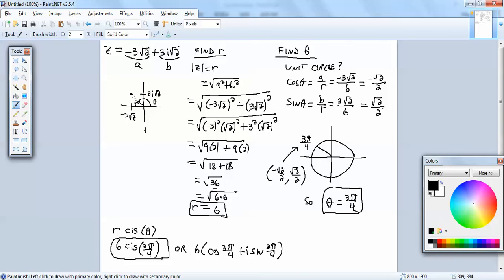Okay, then they want us to find the real part of z. That goes back to our original problem. The real part is your a. So, that's negative 3 square root of 2. They want us to find the imaginary part. That goes back to the first problem. And that's our imaginary part, excluding the i. So, that would be 3 square root of 2, the b.